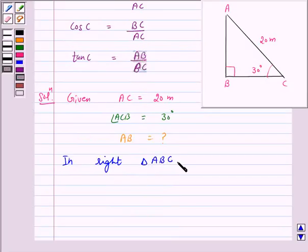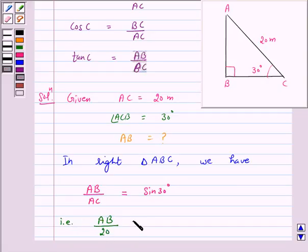So in right triangle ABC, we have AB upon AC is equal to sin 30 degrees. That is AB upon 20 meters is equal to 1 by 2, as sin 30 degrees is 1 by 2.